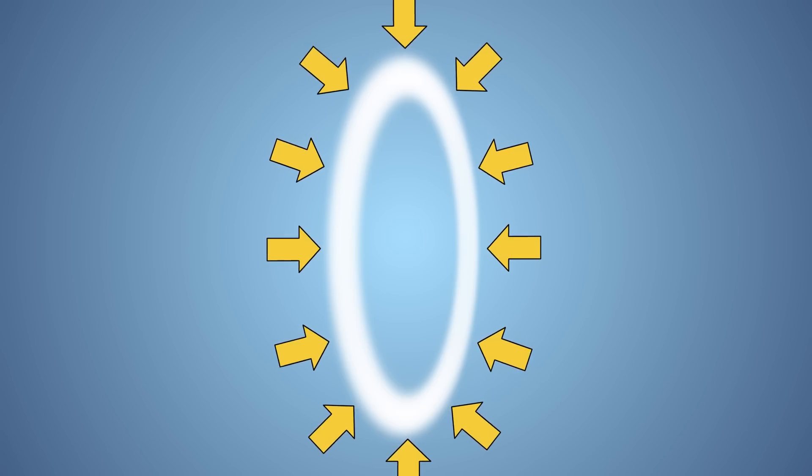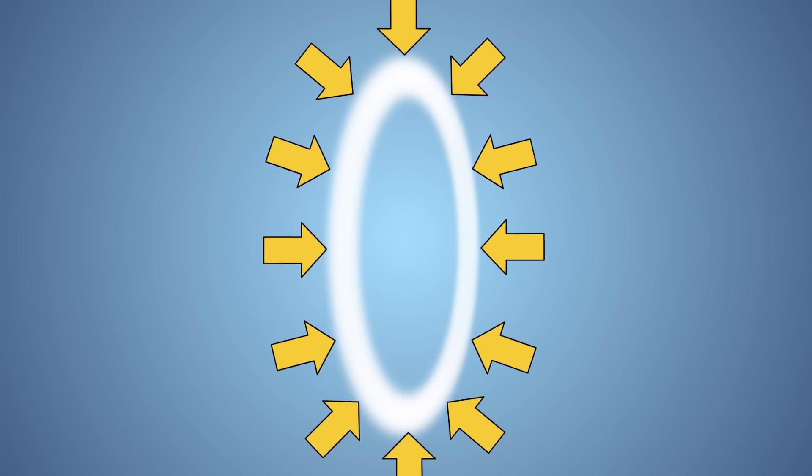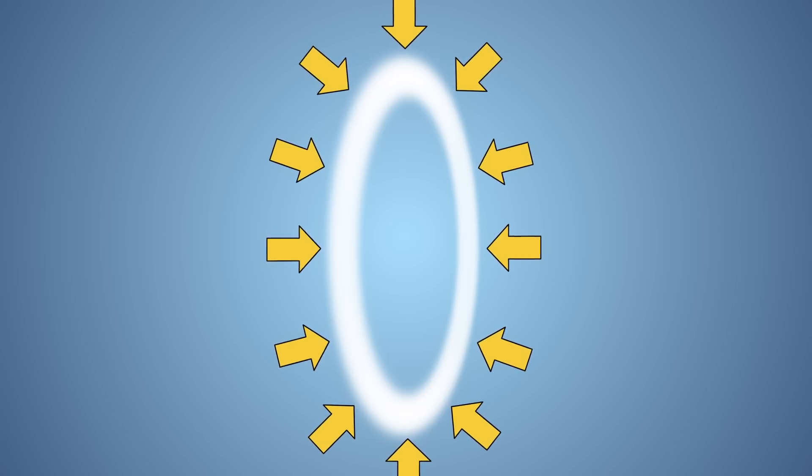This means that as our vortex travels forward, the air around it, which has a greater pressure, pushes inward like a giant mold, preventing it from growing larger and dissipating.